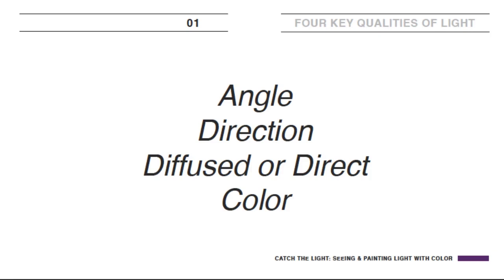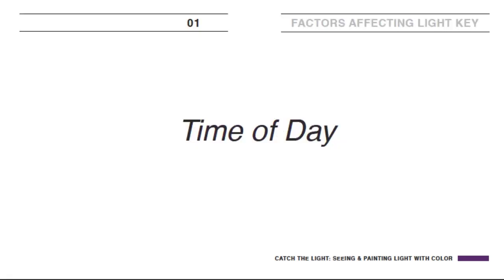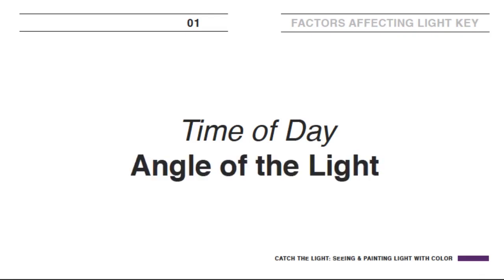Remember that these factors are not disconnected, but interconnected — the angle of the light is going to affect the color of the light. So angle, direction, diffusion, and color are the four factors that greatly impact how we perceive that light. Time of day is directly impacted by the angle of the light, and the angle of the light also impacts the color of the light, as we're going to see in a moment.